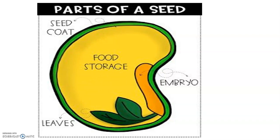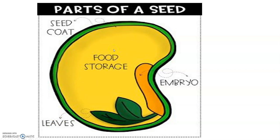The first part, as you see, is the seed coat. Seed coat means the outer layer of the seed. The second part is the embryo. Embryo is a new baby plant. The third part is leaves, and the fourth part is food storage.